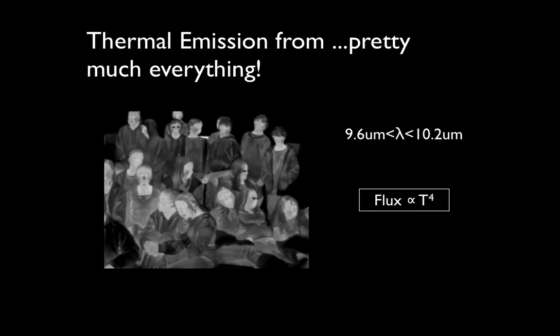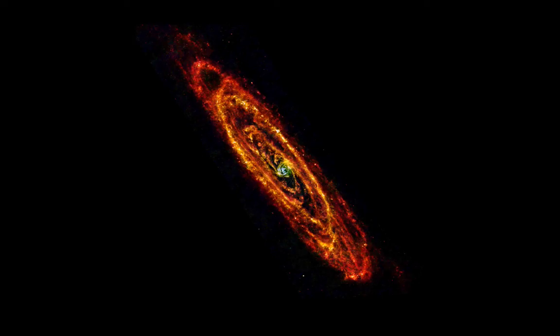So our emission peaks in the infrared. This is the basis for night vision cameras. Us and pretty much everything that surrounds us at so-called room temperature emits in the infrared, as you saw from the demo in class. Hotter things, much hotter things, will emit mostly in the visible, things like your electric stove or the filament in a light bulb. Things that are colder than us emit in longer infrared light, or sometimes even in the radio. This is a picture of our nearby neighbor Andromeda, taken in the long infrared. It was taken by the Herschel Space Telescope, named after William Herschel, the discoverer of infrared radiation.